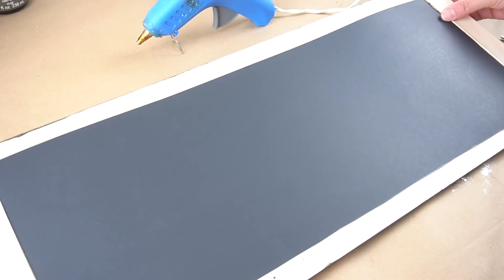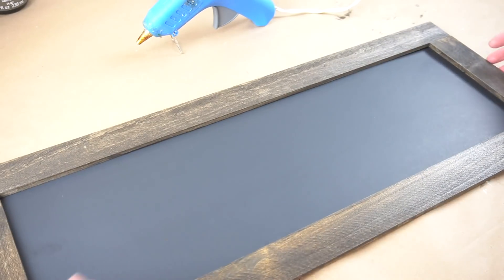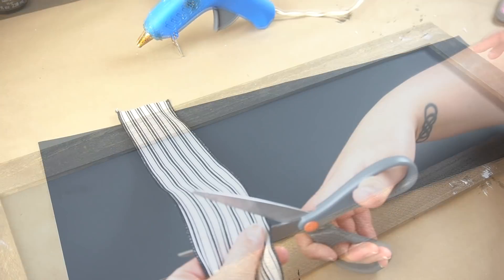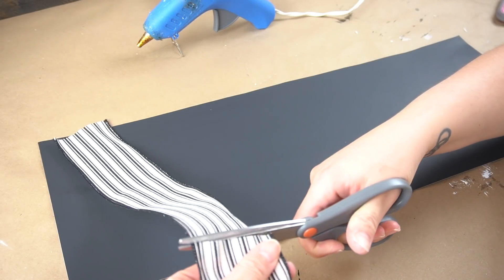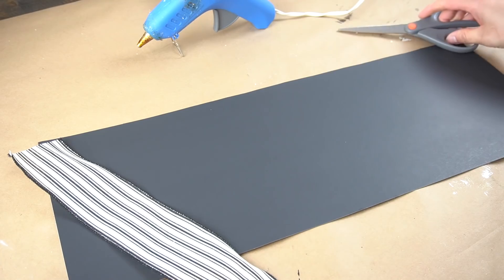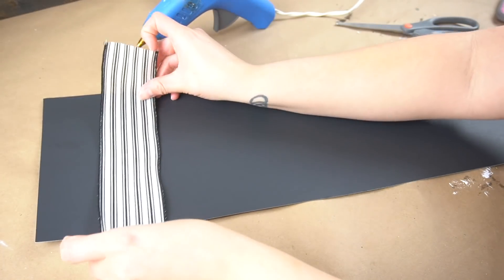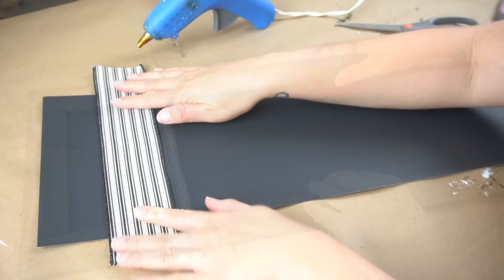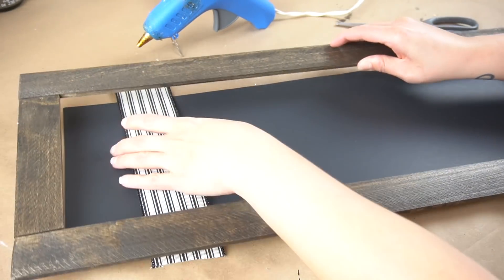Next, I took the poster board and put it behind the frame. That way I made sure it fit properly. Next, I took some really pretty ticking stripe ribbon that I had on hand, and I cut it just so that it would go over either end of the poster board, and I adhered it to the back in order to hold it in place.